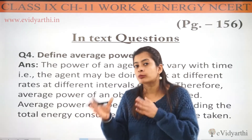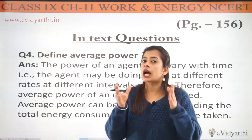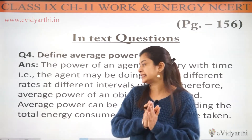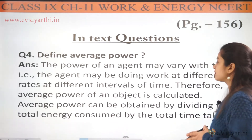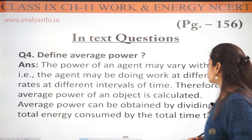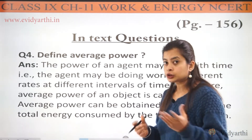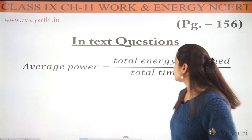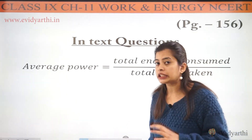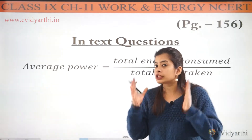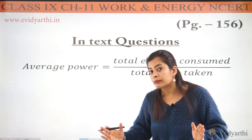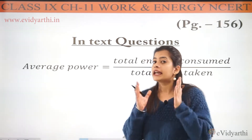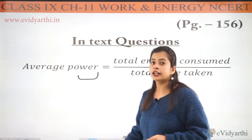Basically, for any object, because of these fluctuations, we calculate average power. Average power can be obtained by dividing the total energy consumed by the total time taken. So average power is defined as the total energy consumed divided by the total time taken — that gives us the average power of an object.